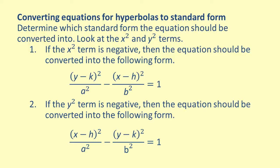Look at the x squared and y squared terms. If the x squared term is negative, then the equation will be converted into the form: y minus k squared all over a squared minus x minus h squared all over b squared equals 1. If the y squared term is negative, then the equation will be converted into the form: x minus h squared all over a squared minus y minus k squared all over b squared equals 1.